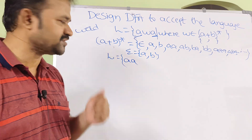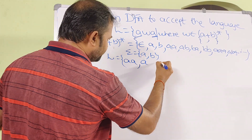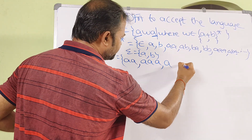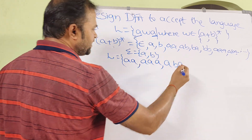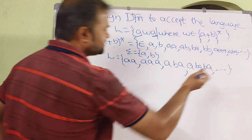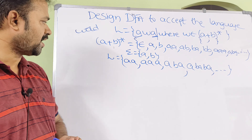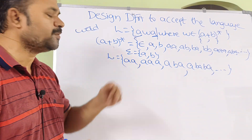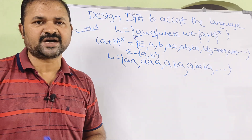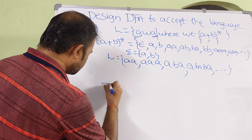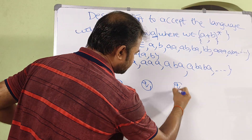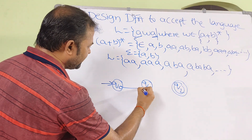The string starts with A and ends with A. In between we can have zero symbols (epsilon), or one A, or one B, or any number of A's and B's. The minimum string is 'AA', whose length is 2. So the total number of states required is 2 plus 1 equals 3. The first state is Q0 (initial state), next is Q1, and Q2 is the final state.